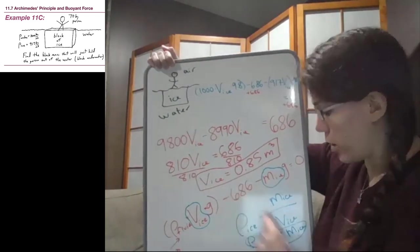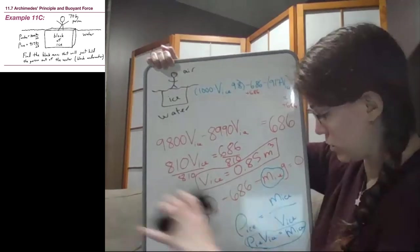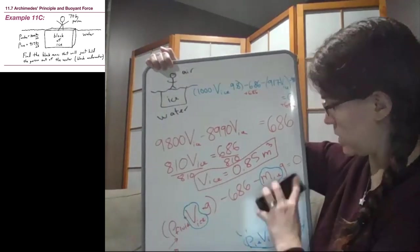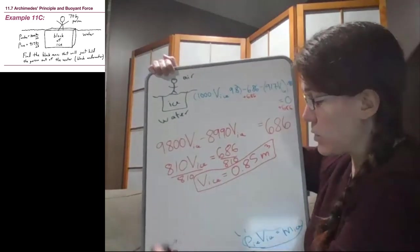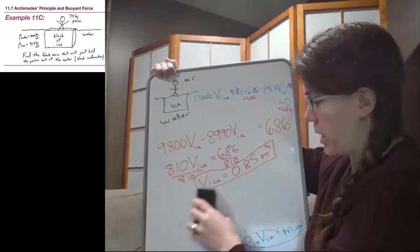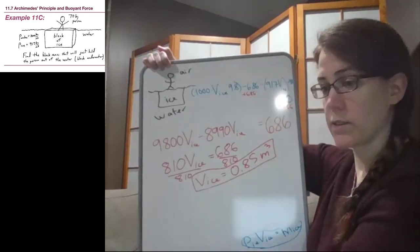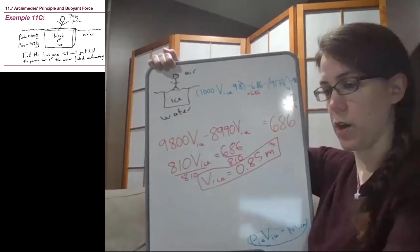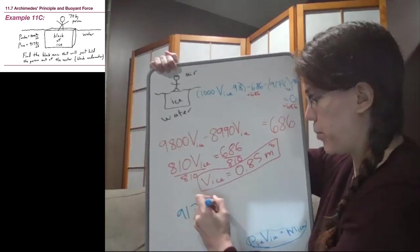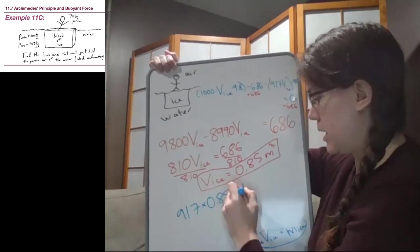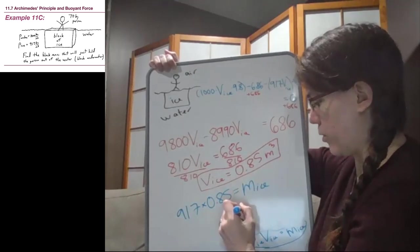So to go from volume to mass, we can just use the equation that we have saved down here in the corner, that the mass, which is what we're really looking for at the bottom here, is the density of that ice times the volume. So 917 times that 0.85 is the mass of the ice that we're looking for.